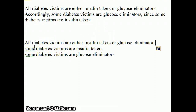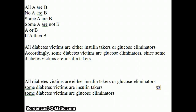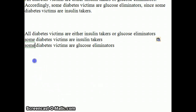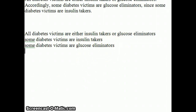The next thing I want to do is find the form. To find the form, I'm going to look for the familiar things. I've got: all A or B, no A or B, some A or B, some A or not B, A or B, if A then B. Looking for the familiar ones, I'm going to skip this one because I've got insulin takers, glucose eliminators. The conclusion is going to be some D are G.